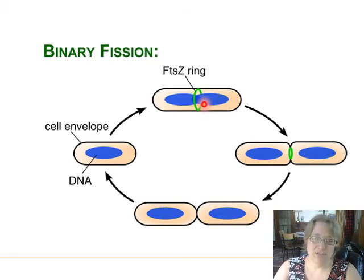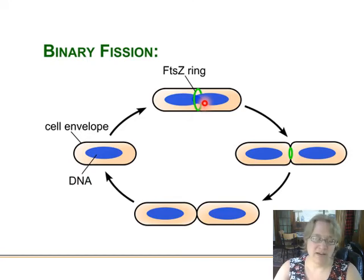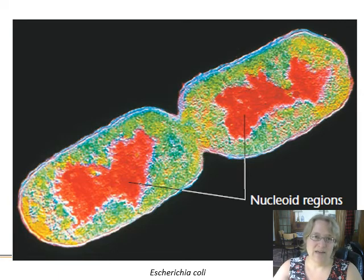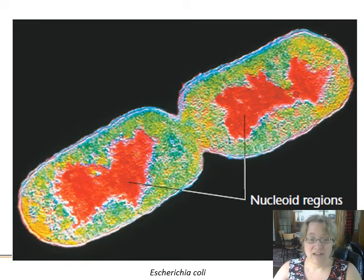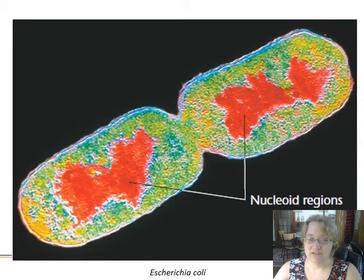Binary fission is very unreliable with a very high error rate, but that's fine when you're an E. coli reproducing an enormous number of times per day. If something is wrong, that cell just doesn't survive. This worked out fine for prokaryotes for millions of years, but when you're a slightly more complicated cell, you need a more structured system in order to survive and pass your genes on to the next generation.